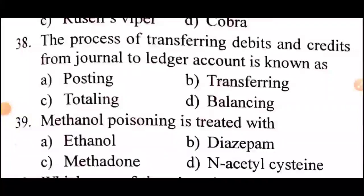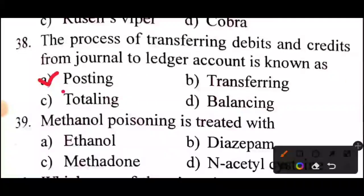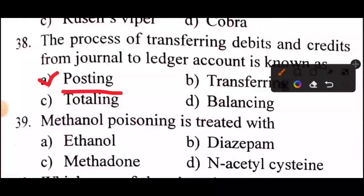Question 38 of 60: The process of transferring debits and credits from journal to ledger account is known as? Answer is Option A: Posting.